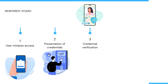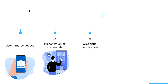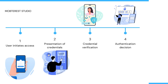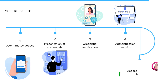Next, we have credential verification, where the system compares the provided credentials against the stored or pre-registered information associated with the user's identity. Then we have the authentication decision, where the system determines whether the user's identity is confirmed and whether access should be granted or denied. Lastly, the user is either allowed access if authentication is successful, or denied access if authentication fails.